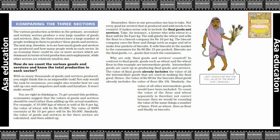You are right in thinking so. To get around these problems, economists suggest that the value of goods and services should be used rather than adding up the actual numbers. For example, if 10,000 kg of wheat is sold at Rs. 8 per kg, the value of wheat will be Rs. 80,000. The value of 5,000 coconuts at Rs. 10 per piece will be Rs. 50,000.